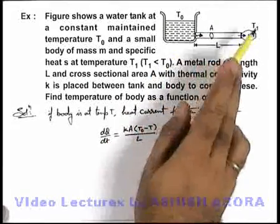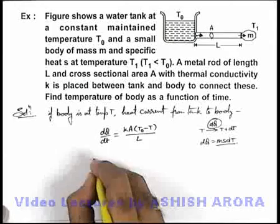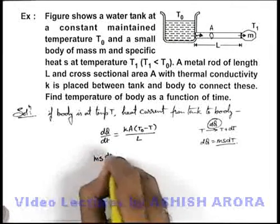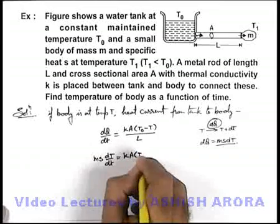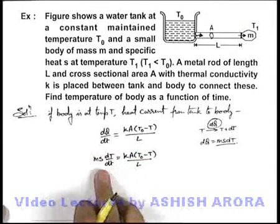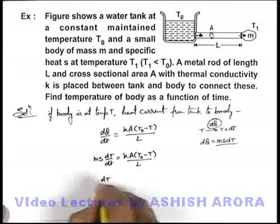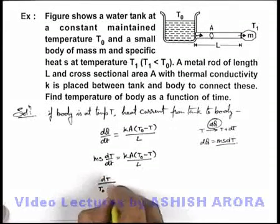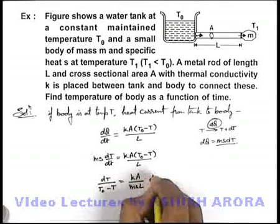As dQ is the heat supplied and its temperature is raised from T to T + dT, we substitute it here. This will be ms dT/dt is equal to kA(T₀ - T)/L. Now if we rearrange the variables, on separating we will get dT/(T₀ - T) is equal to kA/(msL) dt.